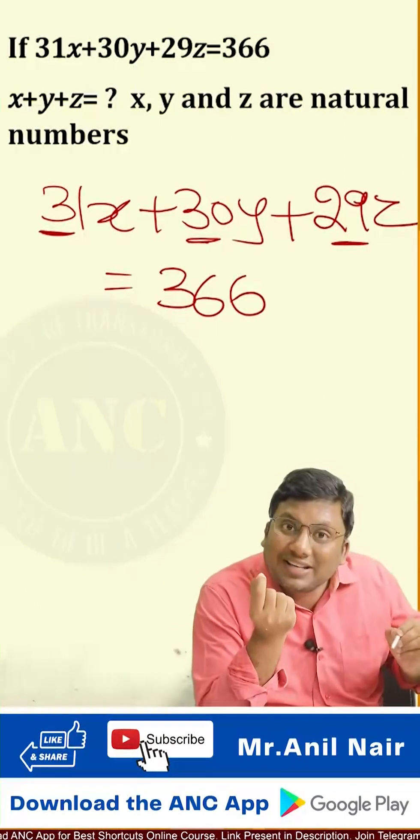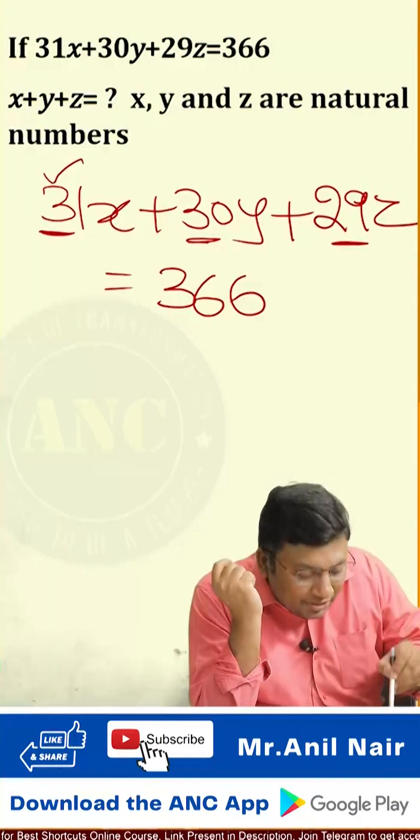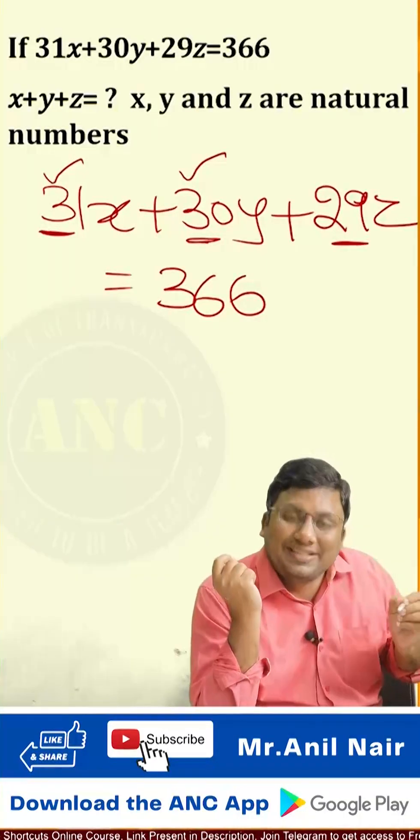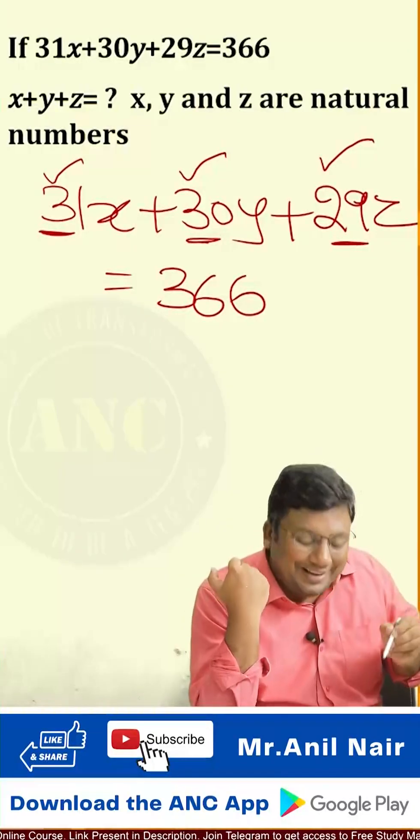In a year, there are certain months which got 31 days. In a year, there are certain months which got 30 days. In a year, there is one month which got 29 days.